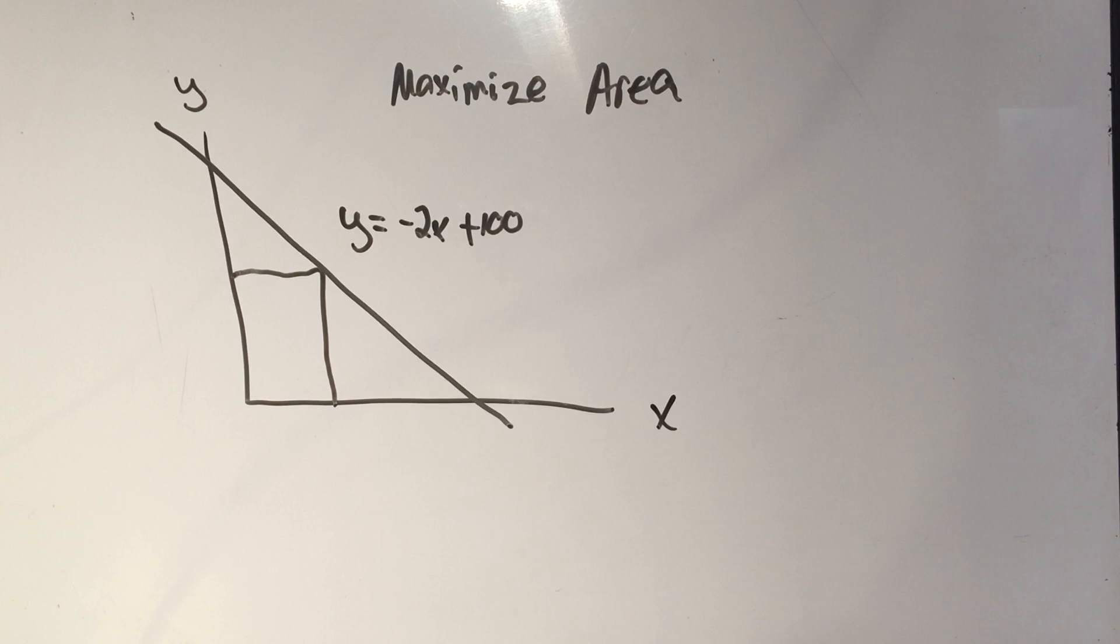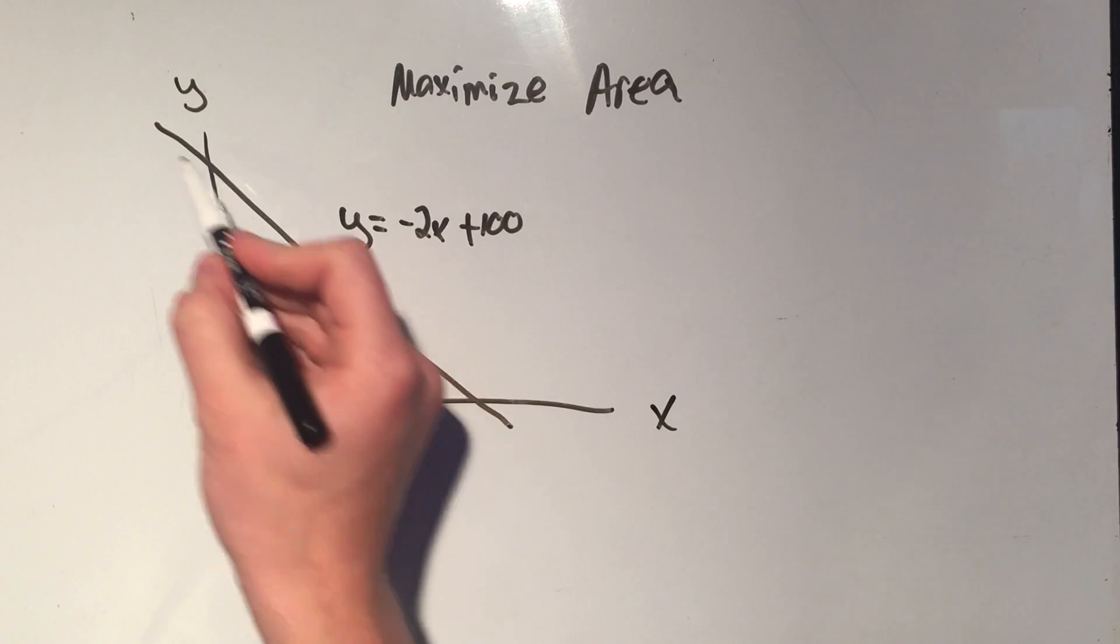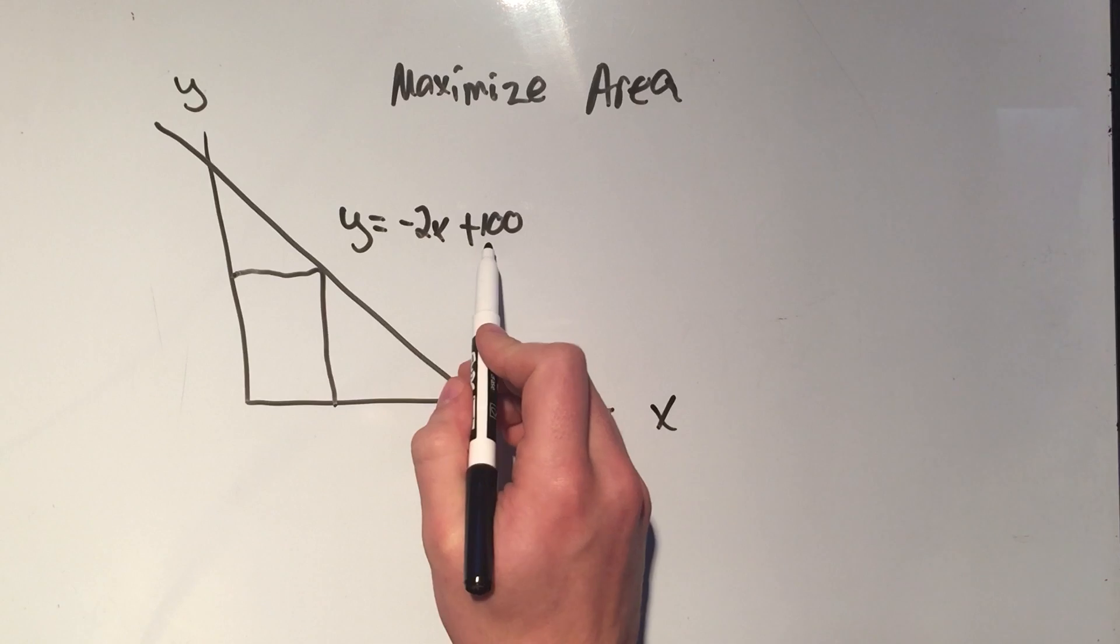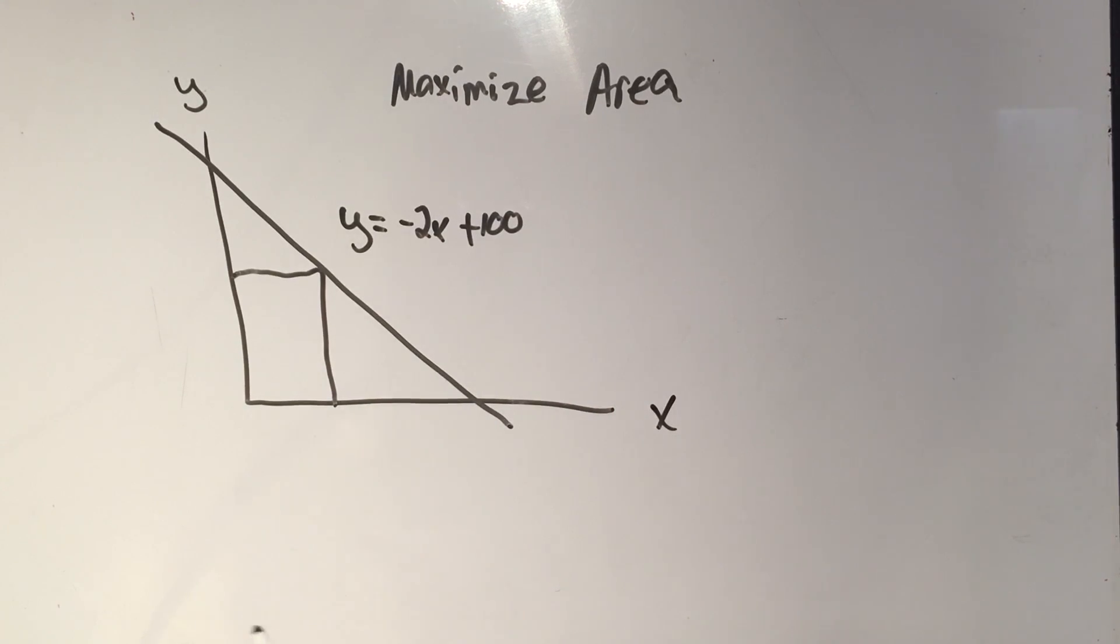You know that optimization problems, they have to give you a constraint and the thing they want to maximize or minimize. In this case, the constraint is this line y equals minus 2x plus 100. It's the thing with the number in it. And the thing I want to maximize is this rectangle.